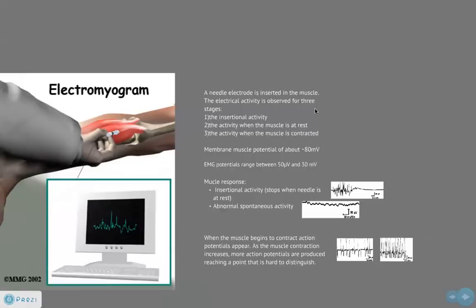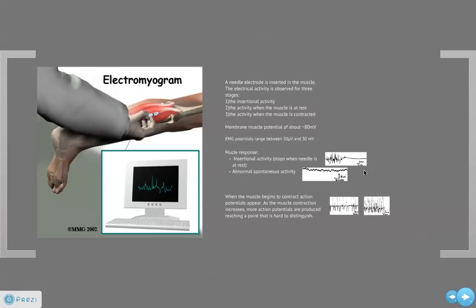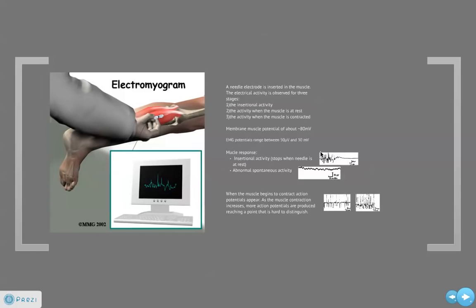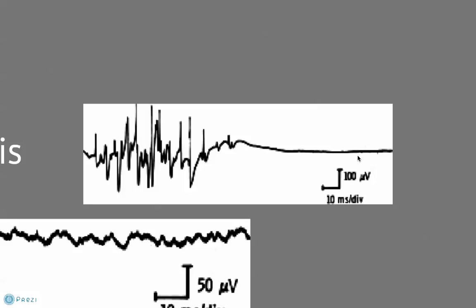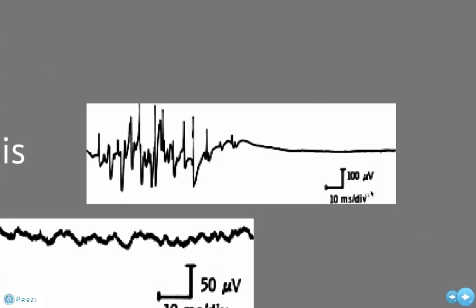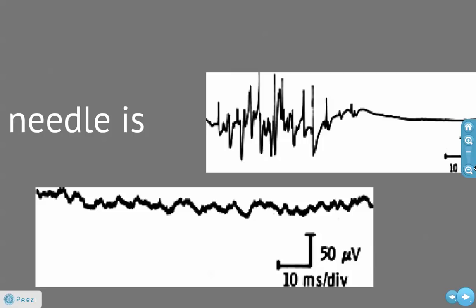The two figures show us how insertional and spontaneous activity look on an electromyogram respectively. In the first figure, we can see how the muscles respond to the needle electrode — action potentials appear and then stop as soon as the needle has stopped moving. If there is any activity beyond the insertion of the needle, that is called spontaneous activity, which we can see in the second figure. This is usually abnormal and could be due to nerve and/or muscle damage.